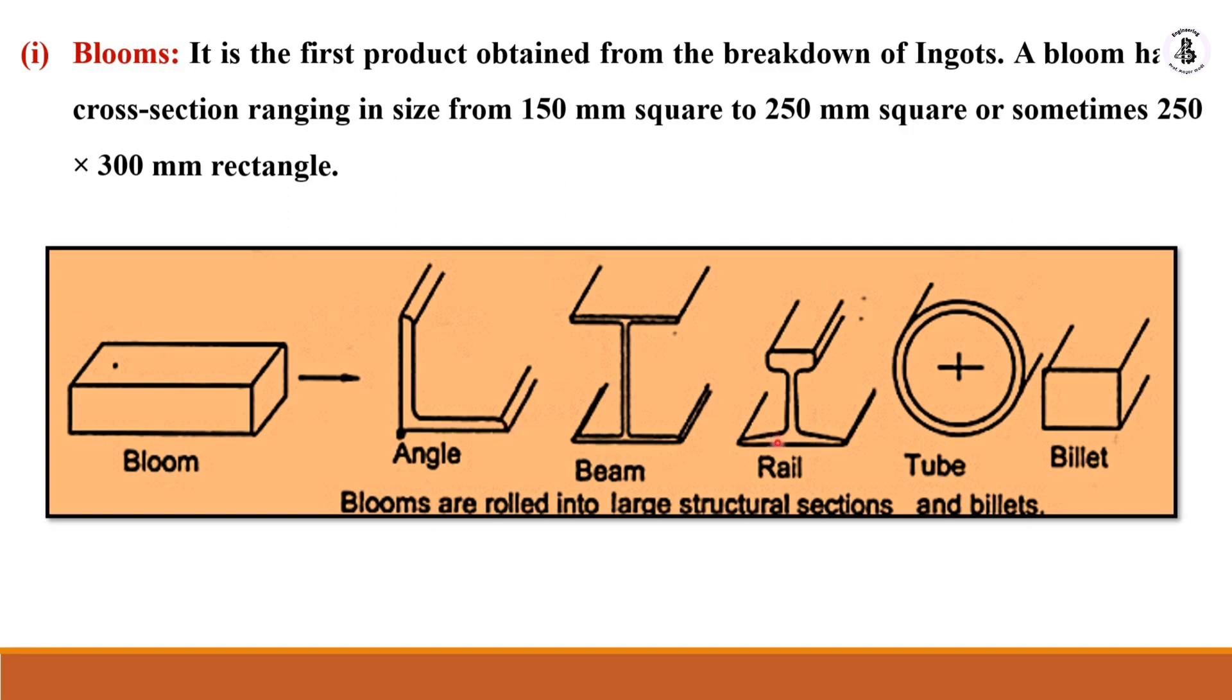In case of making a structure for any industries, there will be a requirement of I beams, T beams, and sometimes angles also produced with the help of this bloom as raw material. According to our required cross-sectional area, we will be selecting the bloom cross-sectional area.